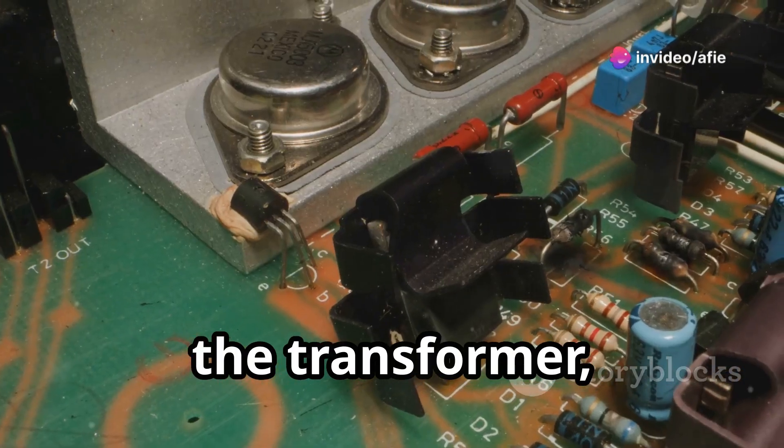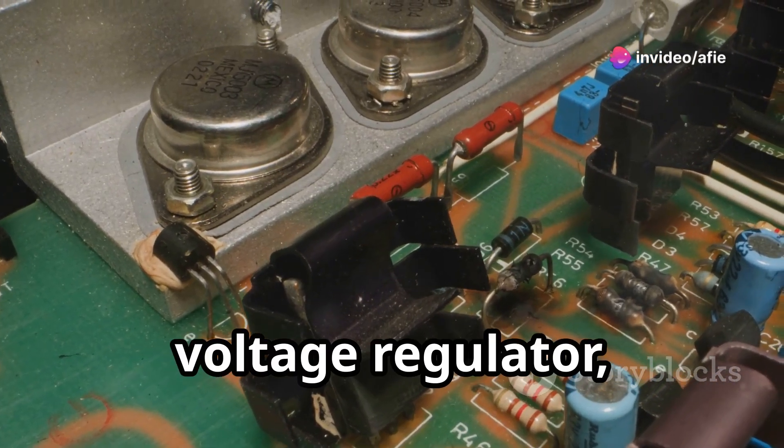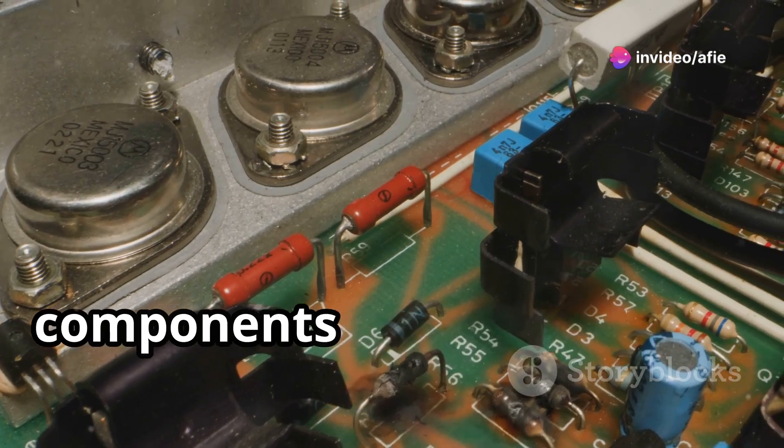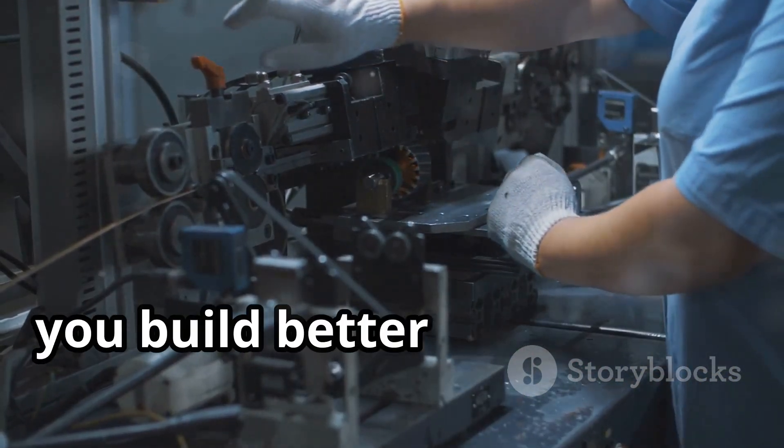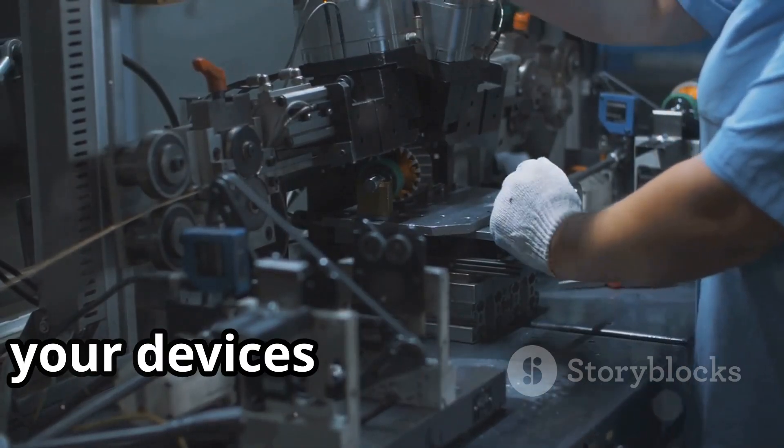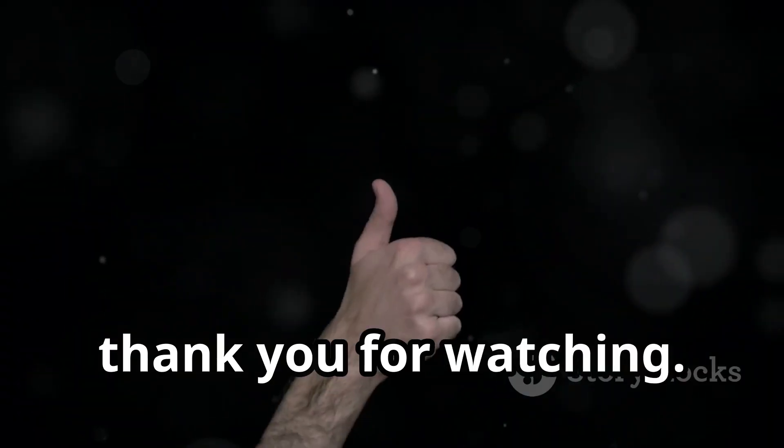In summary, the transformer, rectifier, filter, voltage regulator and output stage are the essential components of any DC power supply. Understanding these will not only help you build better projects, but also ensure your devices operate smoothly. Thank you for watching. Happy building.